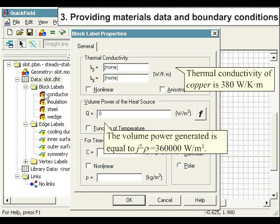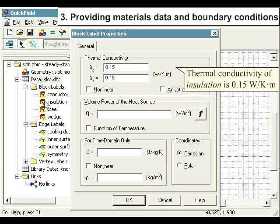Thermal conductivity of copper is 380 watts per Kelvin meter. The volume power generated is equal to 360,000 watts per meter cubed. Thermal conductivity of insulation is 0.15 watts per Kelvin meter. Thermal conductivity of steel is 25 watts per Kelvin meter. Thermal conductivity of wedge is 0.25 watts per Kelvin meter.